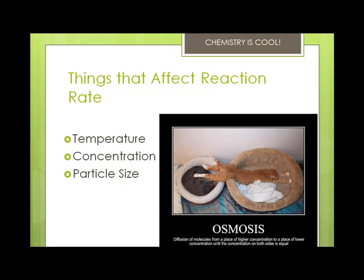Some of the things that affect reaction rate are temperature, concentration, and particle size. Higher temperatures mean faster particles, which means more and harder collisions, so faster reactions happen. With concentration, more concentrated molecules are closer together and collide more often, so higher concentrations lead to faster reactions. With particle size, remember that molecules can only collide at the surface. So smaller particles have a bigger surface area to volume ratio and therefore have a faster reaction rate.